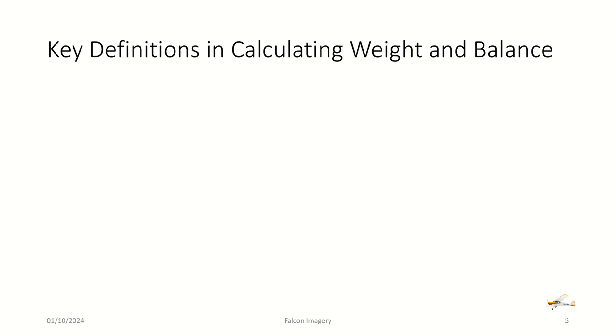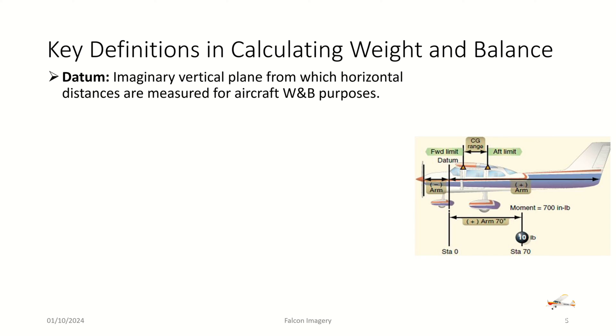So in order to do a weight and balance, which we're trying to ultimately get to here, we need to understand some key definitions of terms. The datum is the area that the manufacturer designs as the reference point for all measurements when comparing various stations along the length of the aircraft. The stations are places such as the pilot seat, the back passenger seat, the baggage, the fuel area, all of those are represented by the term station.